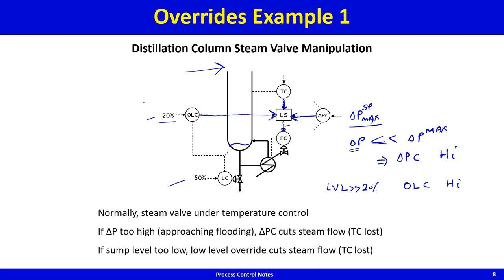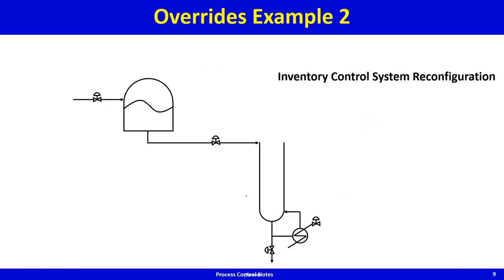Now imagine the delta-P controller has taken over steam valve manipulation: temperature control has been lost, meaning the bottom product composition will swing. We need a different handle to regain temperature control — this requires reconfiguration of the control system.